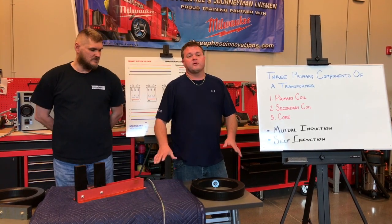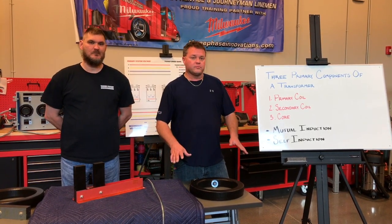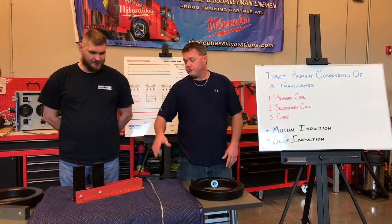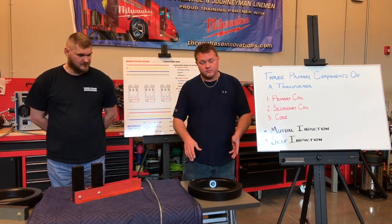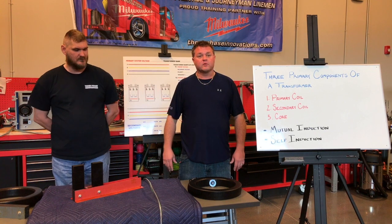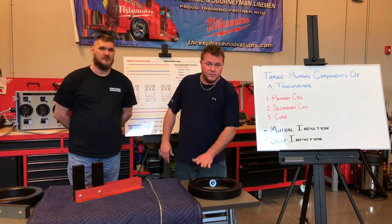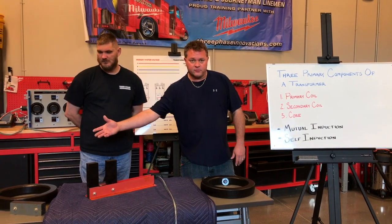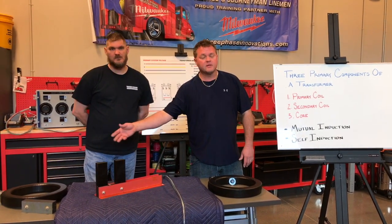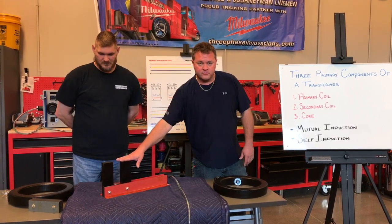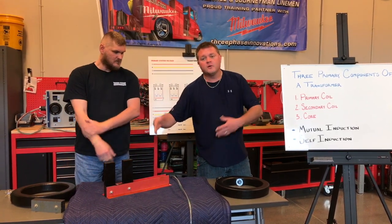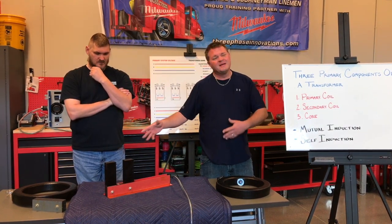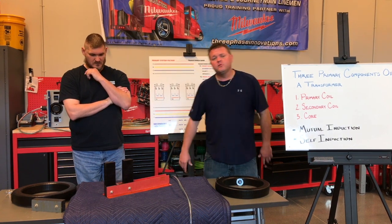We've been talking about the rules, the laws, the principles of how transformers work. There are three key components that make them work: the primary coil, which is the input voltage; the secondary coil, which is the output voltage — it may be stepped up or stepped down; and a core to complete the circuit and make it efficient. These transformers work off two principles: mutual induction and self-induction.